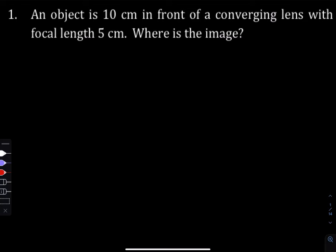This first question asks: an object is 10 centimeters in front of a converging lens, and the converging lens has a focal length of five centimeters. They're asking where the image is. So let's talk about this question.